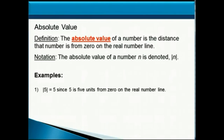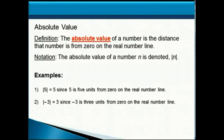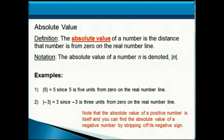So for example, the absolute value of 5 is 5, since the number 5 is 5 units from 0 on the real number line. And the absolute value of negative 3 is positive 3, since negative 3 is 3 units from 0 on the real number line. Note that the absolute value of a positive number is itself, and you can find the absolute value of a negative number by simply stripping off its negative sign.